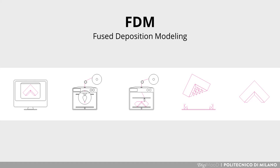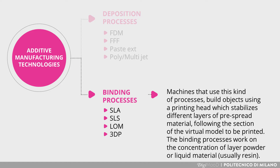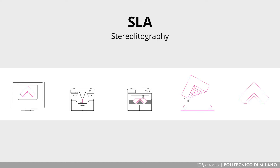When it comes to binding processes, objects are created through the aggregation of layers of pre-spread powder, or through the curing of photopolymers. Among these technologies, the most relevant are stereolithography, or SLA for short, and selective laser sintering, also called SLS. In an SLA printer, a laser hardens UV-curable liquid following the geometry of your 3D model. The printing plate lifts off the liquid tank after each layer until the object is complete. Post-production is then necessary to wash away the extra liquid and remove the supports.